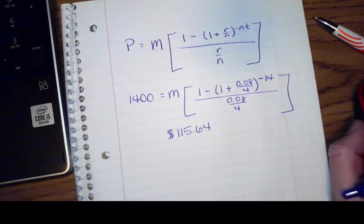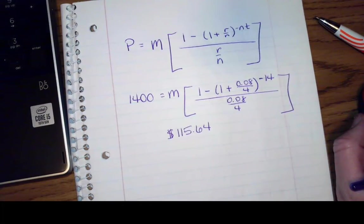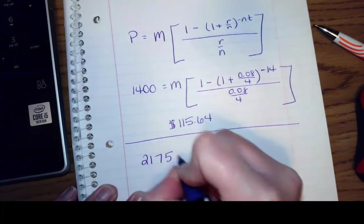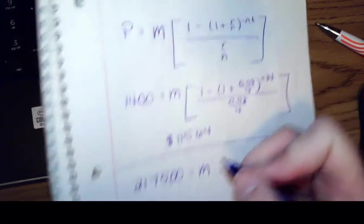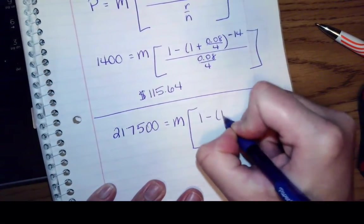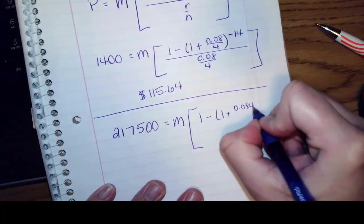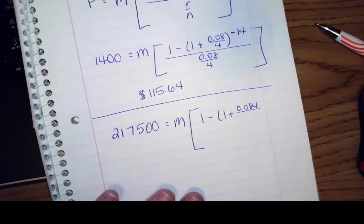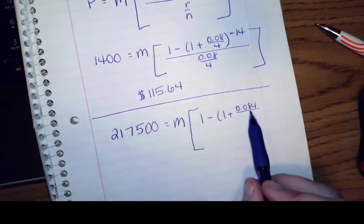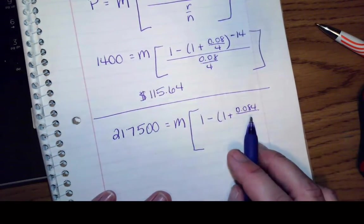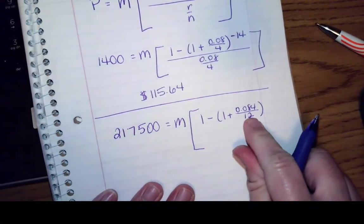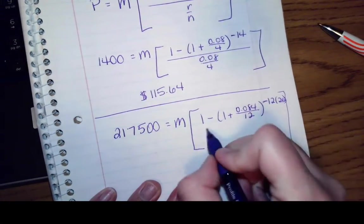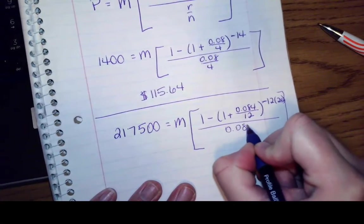So find a monthly house payment necessary to amortize an 8.4% loan of $217,500 for 25 years. So I'm looking at paying off $217,500. That equals what does my monthly payment need to be? Times 1 minus 1 plus, and I am doing 8.4%, so I have 0.084. Over 25 years, it says monthly, so I'm doing this for 12 months out of the year, for 25 years. So negative 12 times 25, over that little mess right there, so 0.084 over 12.